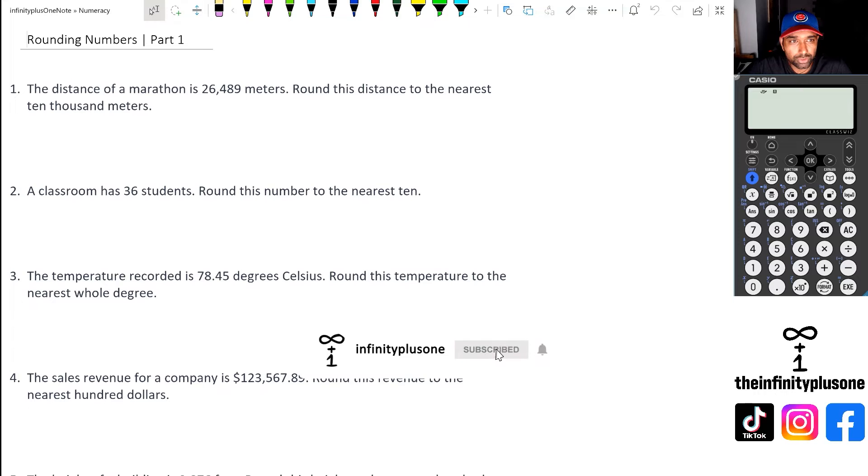We've got about five questions to look through in this short video. The first question here is the distance of a marathon is 26,489 meters. I'm going to quickly write that down: 26,489. Now the question is asking us to round this distance to the nearest 10,000 meters. So if you look at the nearest 10,000 meters, we're really looking at this highlighted number here because that's the place value of 10 thousand.